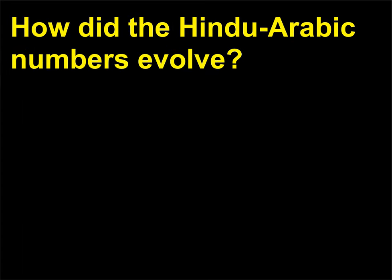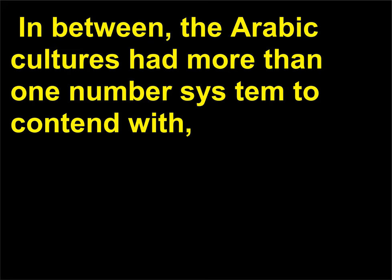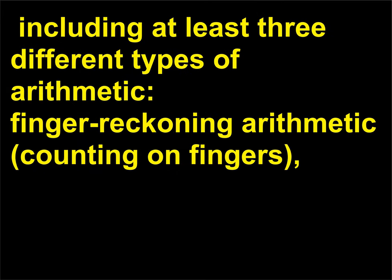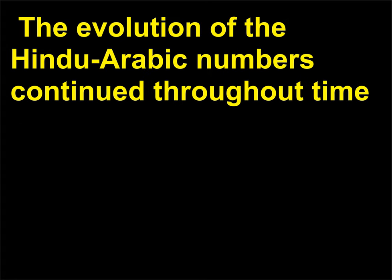How did the Hindu-Arabic numbers evolve? The evolution of the Hindu-Arabic numbers was not a straight line from India to Arabia and on to Europe. In between, the Arabic cultures had more than one number system to contend with, including at least three different types of arithmetic: finger-reckoning arithmetic (counting on fingers), a sexagesimal system with numbers written in letters of the Arabic alphabet, and Indian numeral arithmetic. The evolution of the Hindu-Arabic numbers continued throughout time.